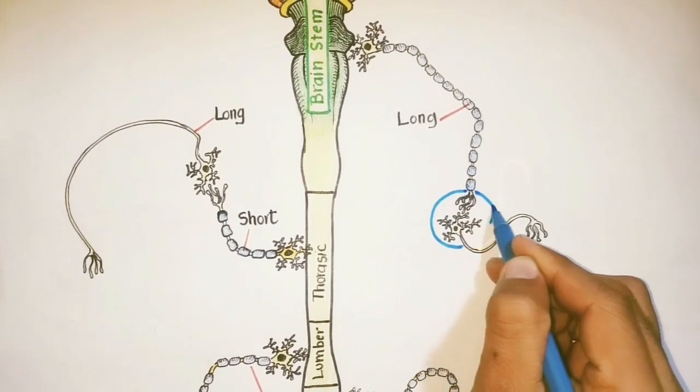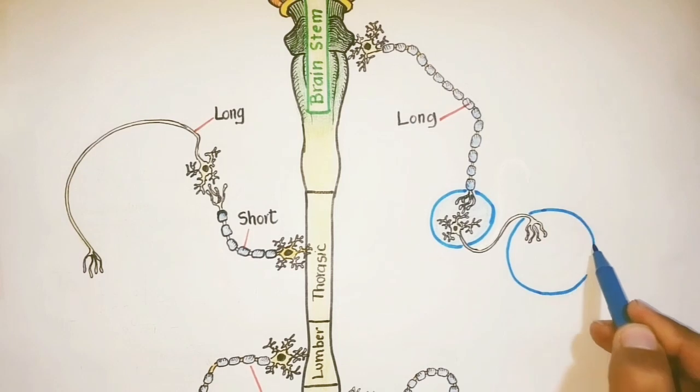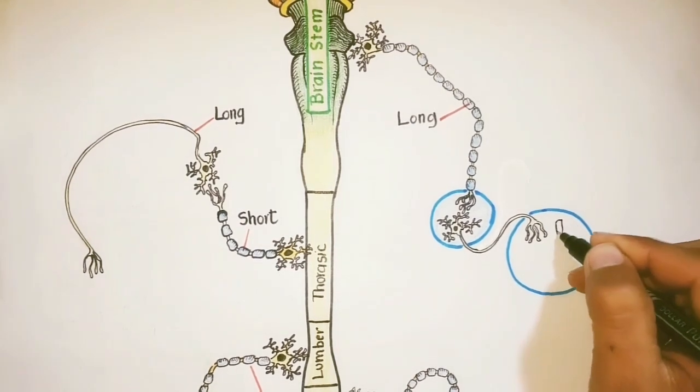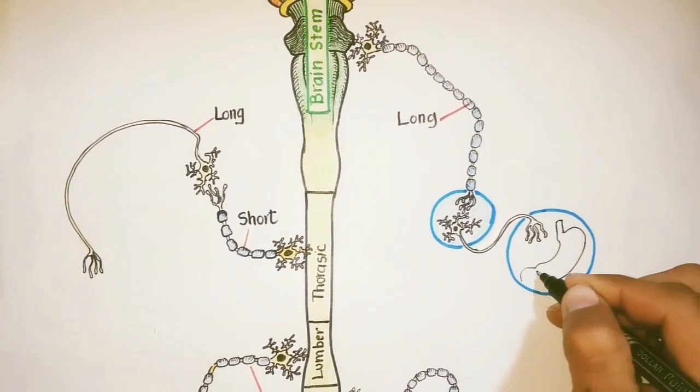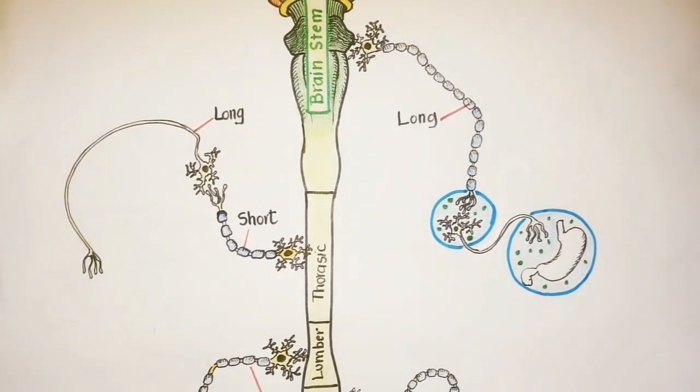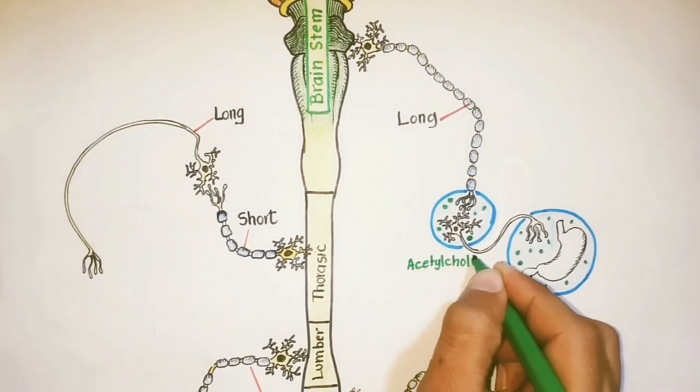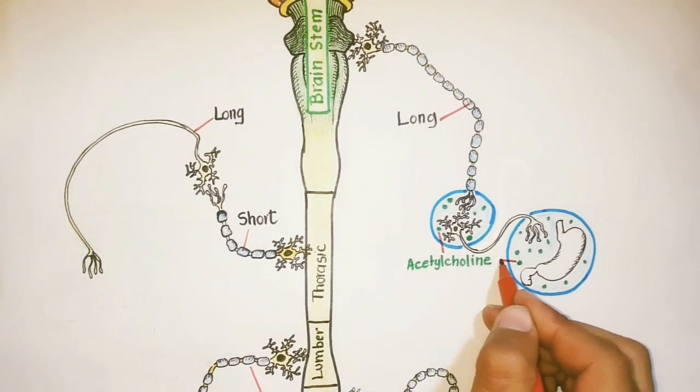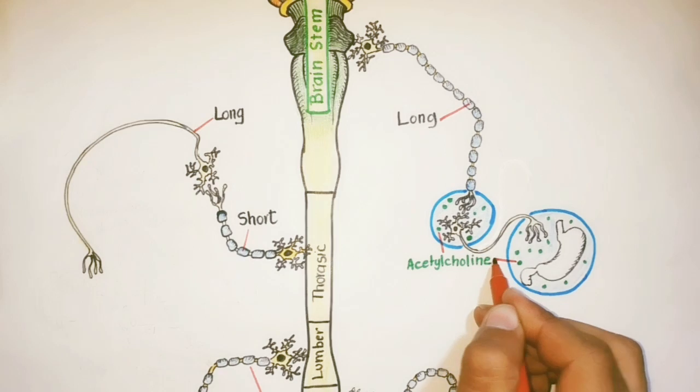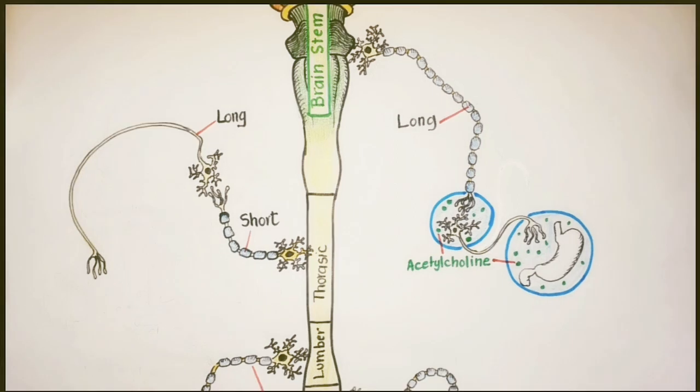The preganglionic neurons of both divisions are cholinergic, meaning they secrete acetylcholine as a neurotransmitter. So here in case of parasympathetic nervous system, the neurotransmitter is acetylcholine. While same here in the ganglia between the postganglionic and the effector organs, for example the stomach here, the neurotransmitter is again acetylcholine.